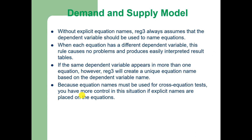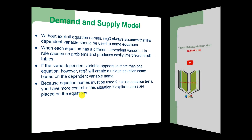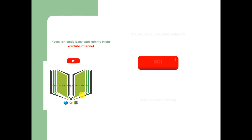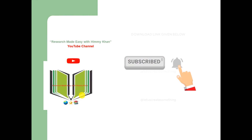Without explicit equation names, reg3 always uses the dependent variable to name equations. When each equation has a different dependent variable, this causes no problems and produces easily interpreted result tables. If the same dependent variable appears in more than one equation, reg3 will create a unique equation name based on the dependent variable. Because equation names must be used for cross-equation tests, you have more control if explicit names are placed on the equations. If you have not subscribed to this channel, kindly subscribe and click the bell icon so that you can get timely notifications about other videos.